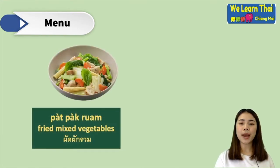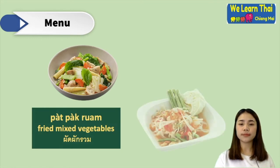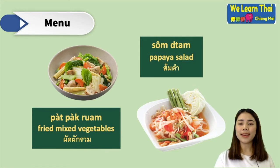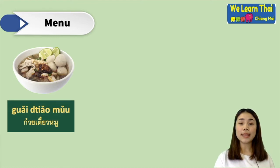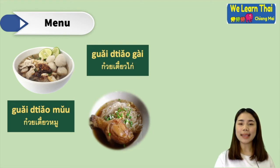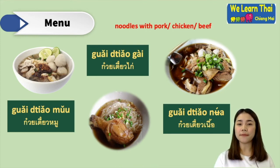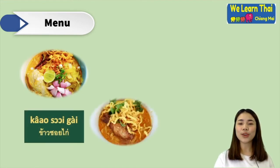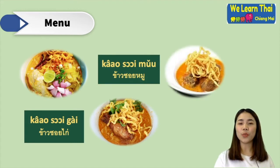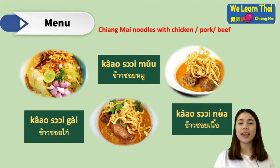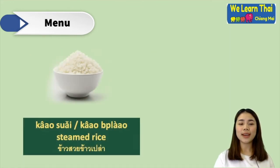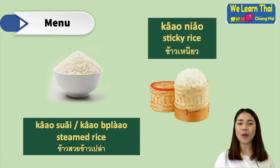And the next menu: ผัดผักรวม — fried mixed vegetables. And the next one: ก๋วยเตี๋ยว — noodle, and you can specify with pork, chicken or beef. And ข้าวซอยไก่, ข้าวซอยหมู, and ข้าวซอยเนื้อ — Chiang Mai noodle with chicken, pork or beef. And ข้าวสวย or you can say ข้าวเปล่า — it means steamed rice. ข้าวเหนียว — sticky rice.